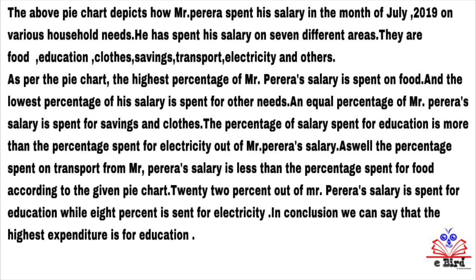22% out of Mr. Pereira's salary is spent on education while 8% is spent on electricity. In conclusion, we can say that the highest expenditure is for education. You will be given 10 marks for this kind of answer also. My dear children, I think now you might have got a brief idea about writing a description for a pie chart.